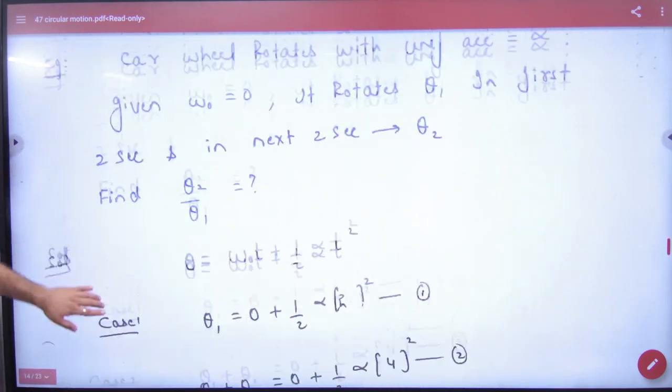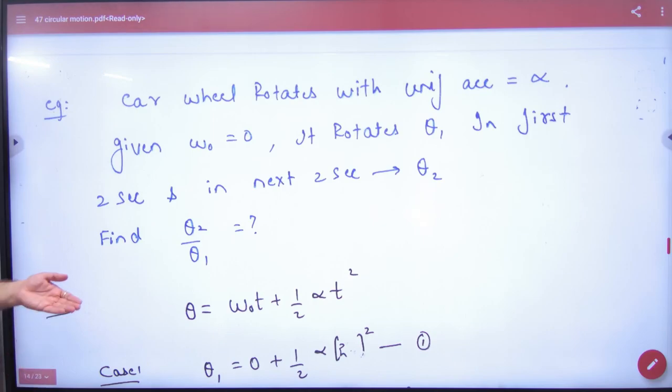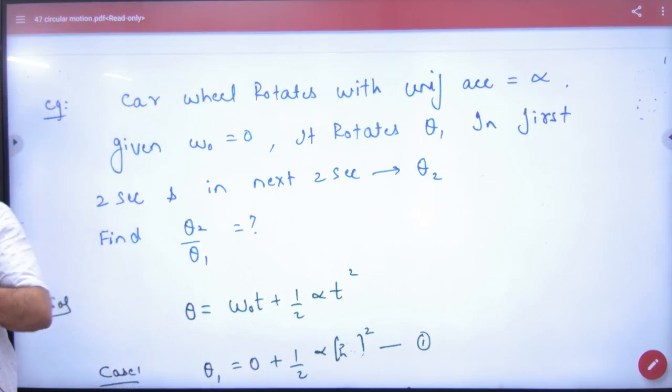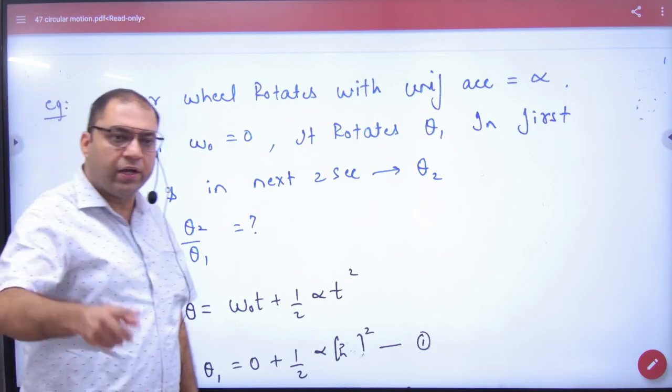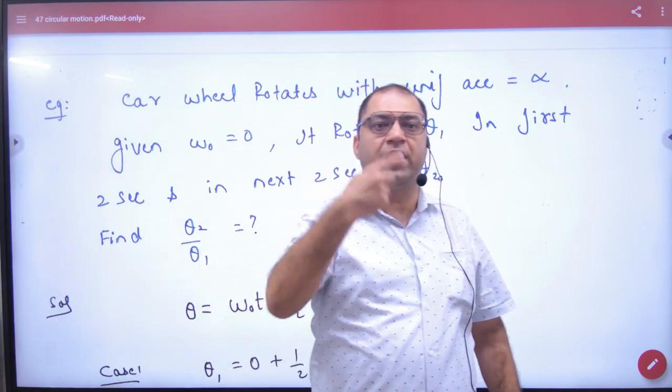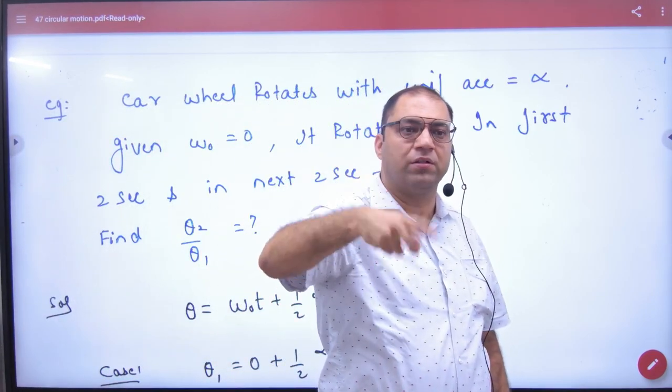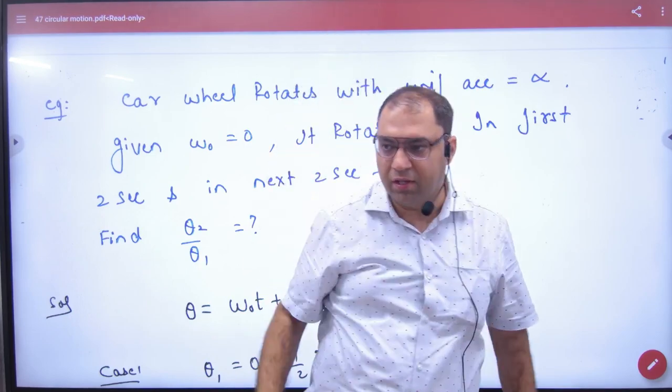Let's see. Car wheel rotates with uniform acceleration alpha. If the wheel is spinning with alpha, it means omega is increasing. First, that is slowly, then slowly, then slowly. Omega is increasing.